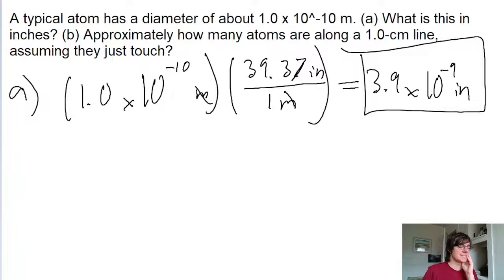Part B asks us how many atoms are along a 1 centimeter line, which is basically saying that if we treat the diameter of the atom as a length, then how many atoms per centimeter? We can think of this as converting from centimeters into atoms. So we're starting off with 1 centimeter.